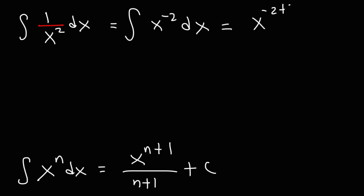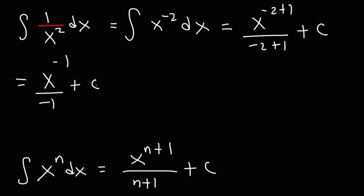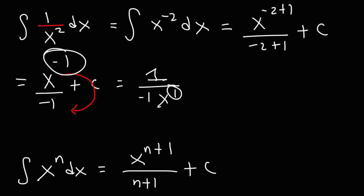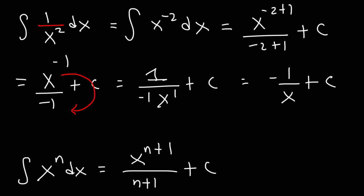We're going to add 1 to the exponent and then divide by that result. Negative 2 plus 1 is negative 1. Our next step is to take the variable and move it back to the bottom, so this is going to be 1 over negative 1 x to the positive 1. So we can write our final answer as negative 1 over x plus c. This is the indefinite integral of 1 over x squared.